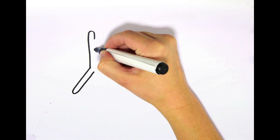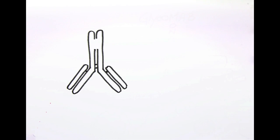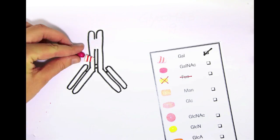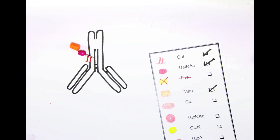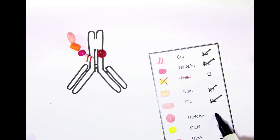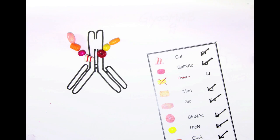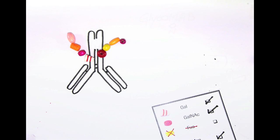After they are born, natural human antibodies get decorated in a very specific way with carbohydrates, a process called glycosylation. Getting the sugar pattern just right is very important for the antibody to be acknowledged by the human immune system.